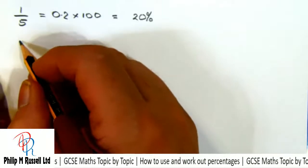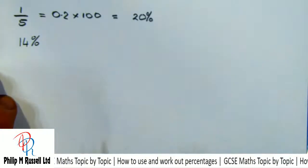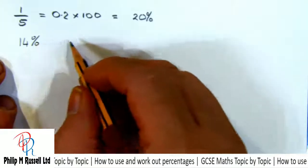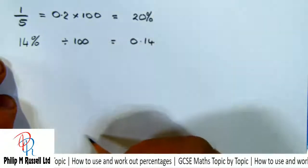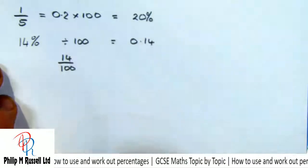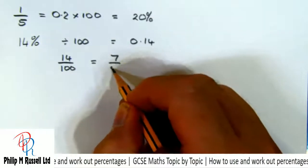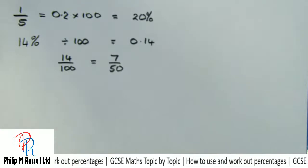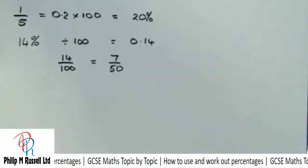We could also change it around. If I've got 14%, I can write that as a decimal by dividing by 100, giving 0.14. To turn it into a fraction, I take 14 over 100, which cancels down: dividing by 2 gives me 7/50. So we can make a series of conversions between percentages, decimals, and fractions.